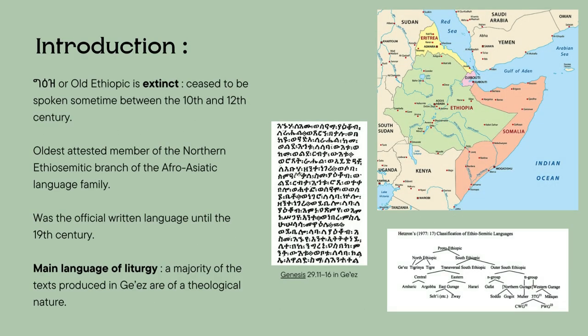Most of the languages spoken in Ethiopia and Eritrea pertain to the Afro-Asiatic family. Ge'ez belongs to the Semitic branch, more precisely the North Ethio-Semitic branch. It's an ancient language that is considered extinct and is usually referred to as Old Ethiopic. However, it remained in use as the official written language until the 19th century, when the written use of Amharic, another Semitic language, was promoted in an attempt to modernize the country.